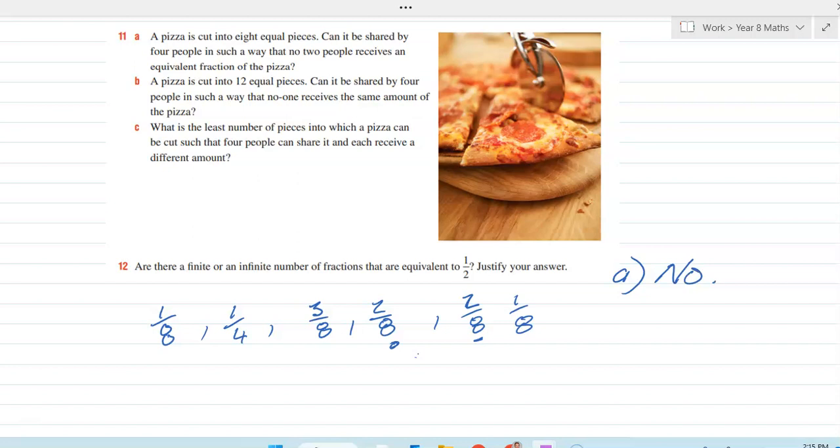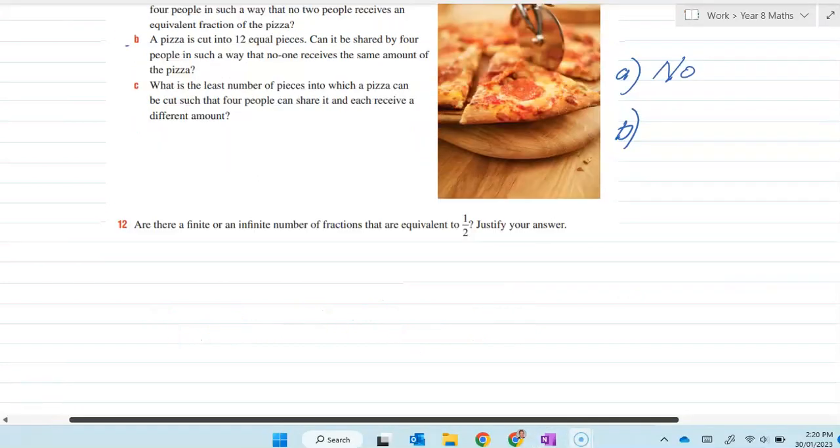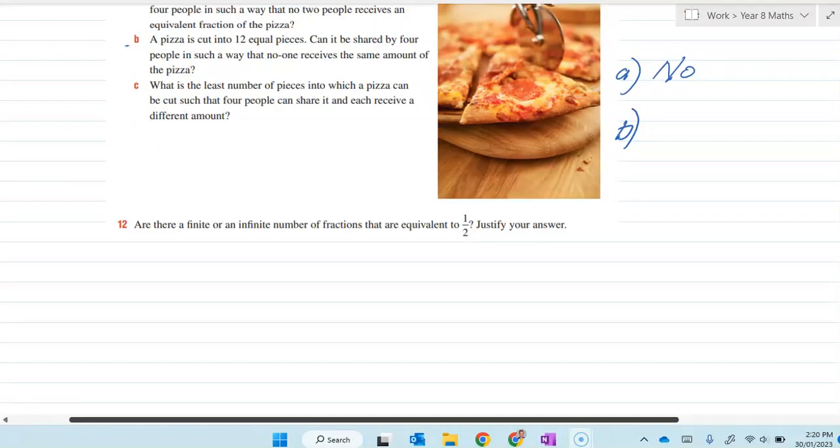You can share it between four people and no two get exactly the same. And you divide 12 into 12 pieces so that no one receives the same amount. So in part B, you would have 12 pieces.